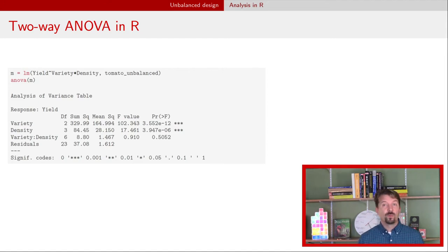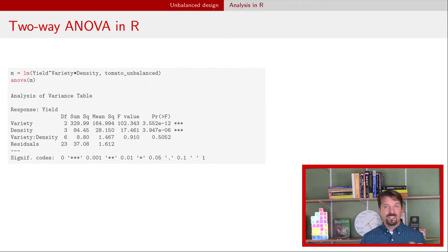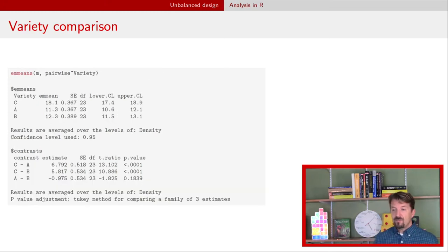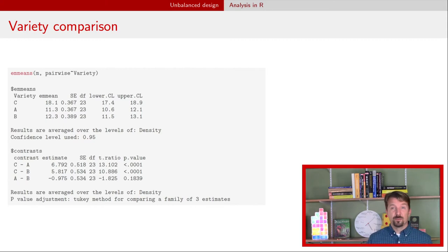In particular, we look at the interaction to see if the effect of variety depends on density and vice versa. The relatively large p-value indicates no evidence that there is an effect of one on the other. Nonetheless, we move forward with the interaction model, just like last time, to answer scientific questions of interest.